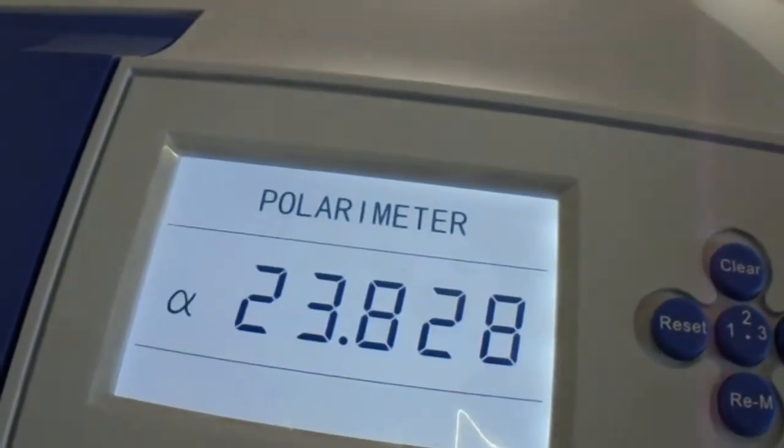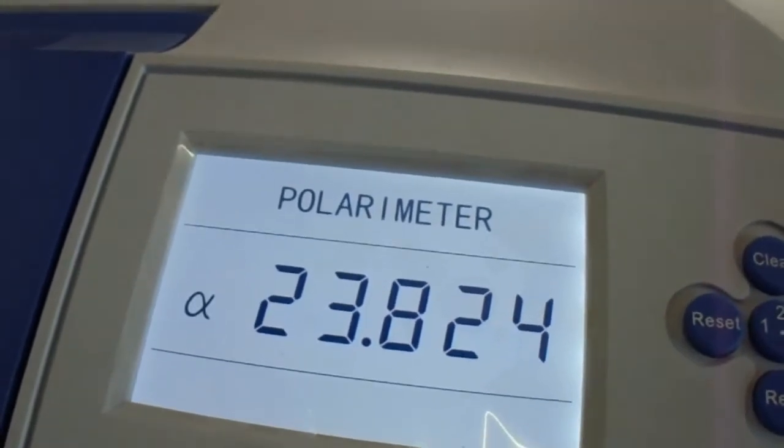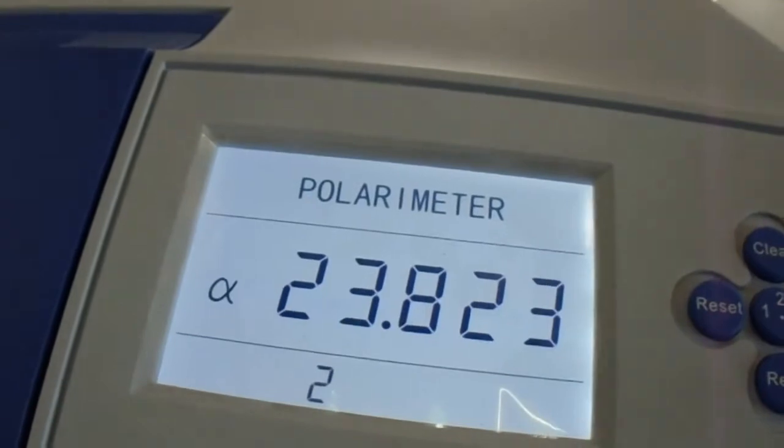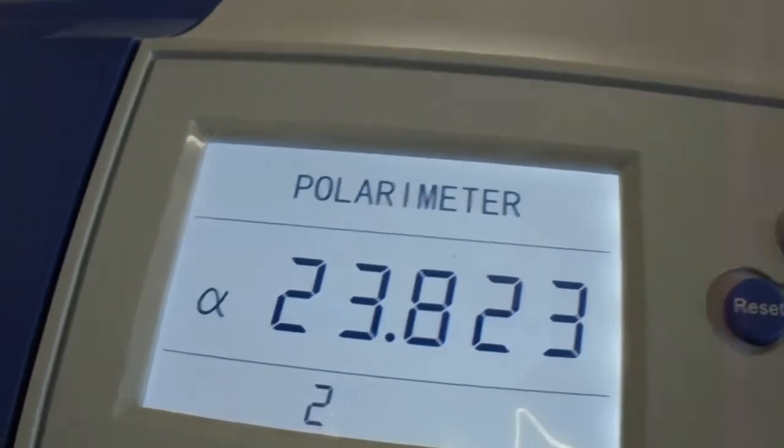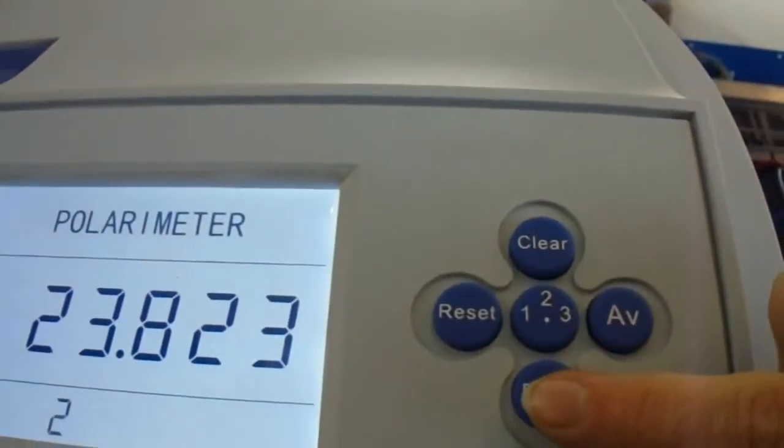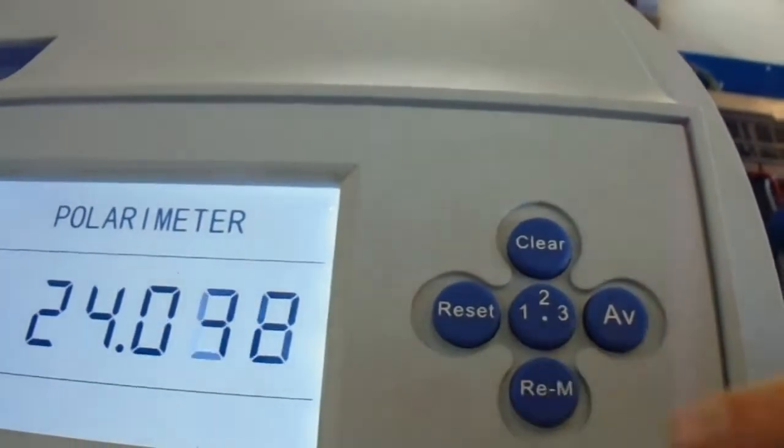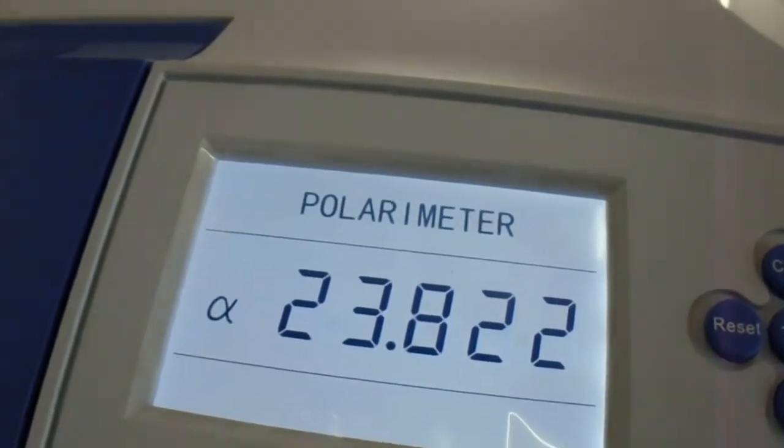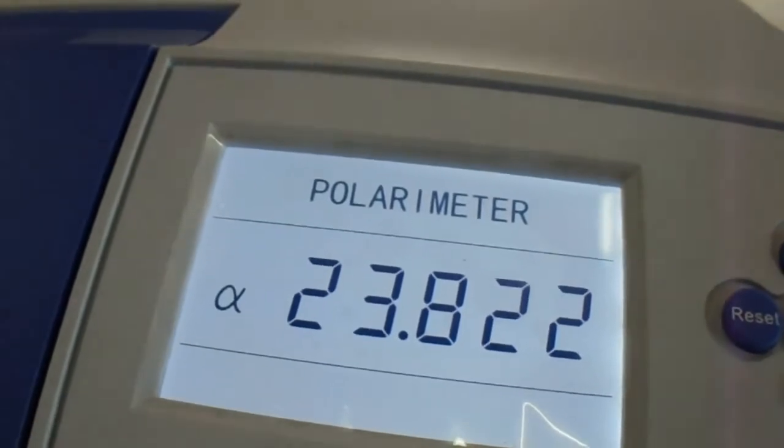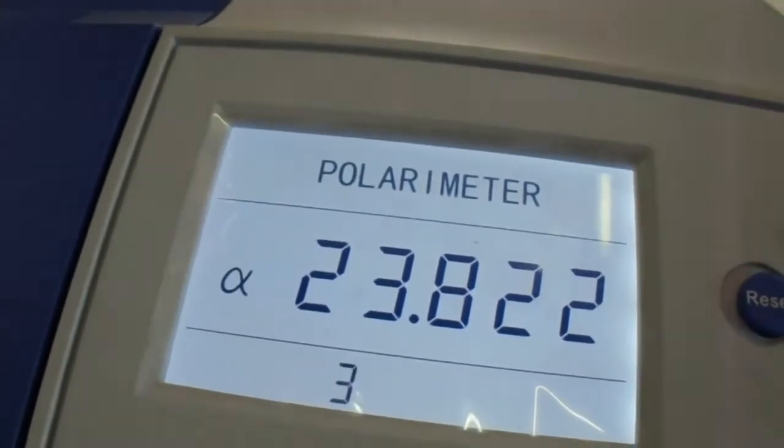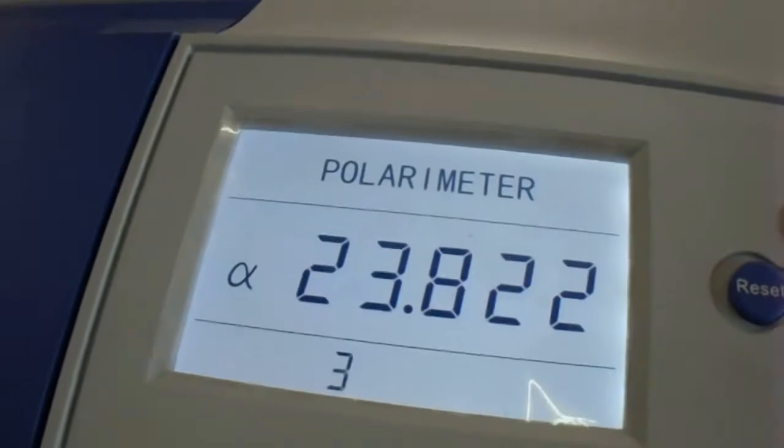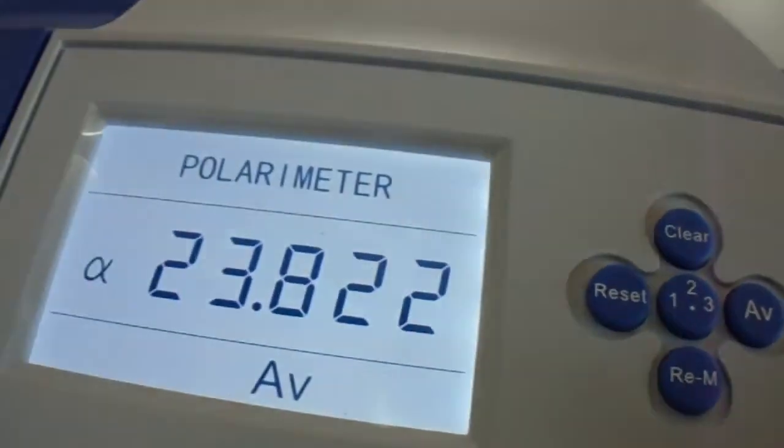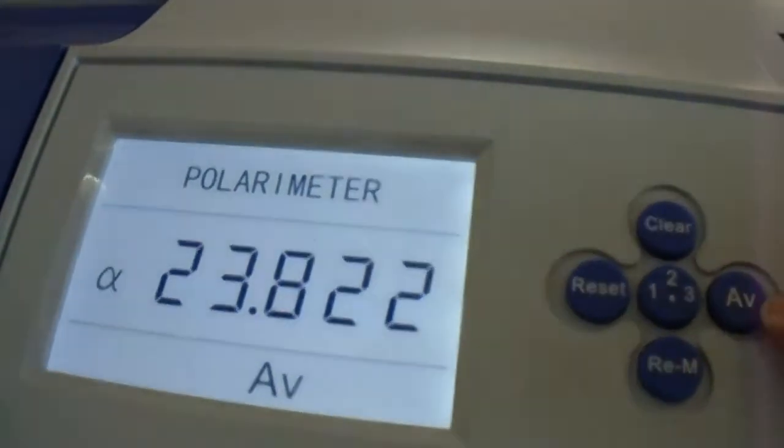To obtain the second measurement, wait for having number two, then click again in the same button to have your third measurement. Then you can obtain the average by clicking AB.